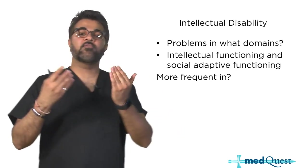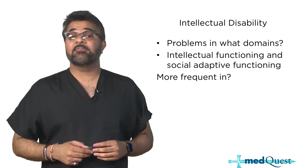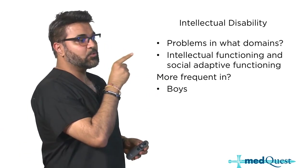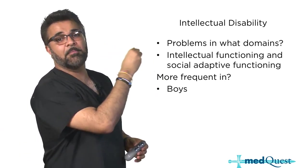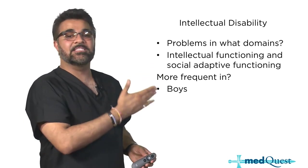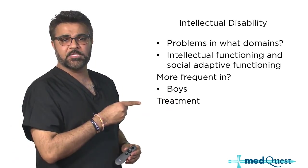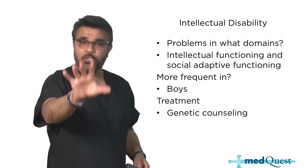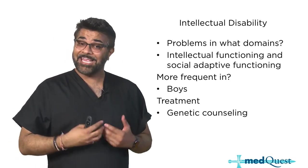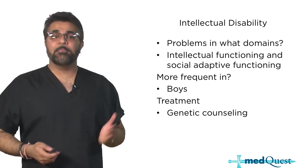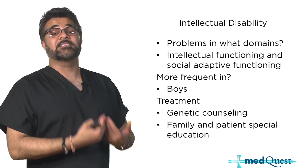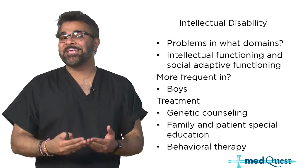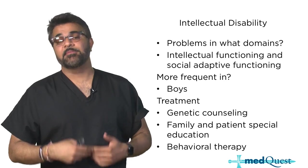If they ask you, is intellectual disability more frequent in males or females? The answer on the exam is that it's more frequent in males. The most important thing to talk about with intellectual disability is treatment - what are we going to do for these people once they've been identified? The first is genetic counseling, which is done by a genetic counselor. Both the family and the patient have to receive specific guided special education, and then behavioral therapy so they're able to overcome specific areas of intellectual and social adaptive difficulty.